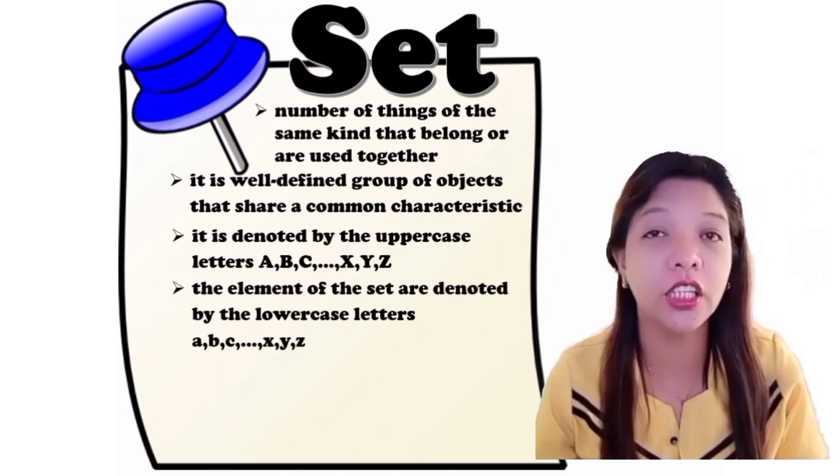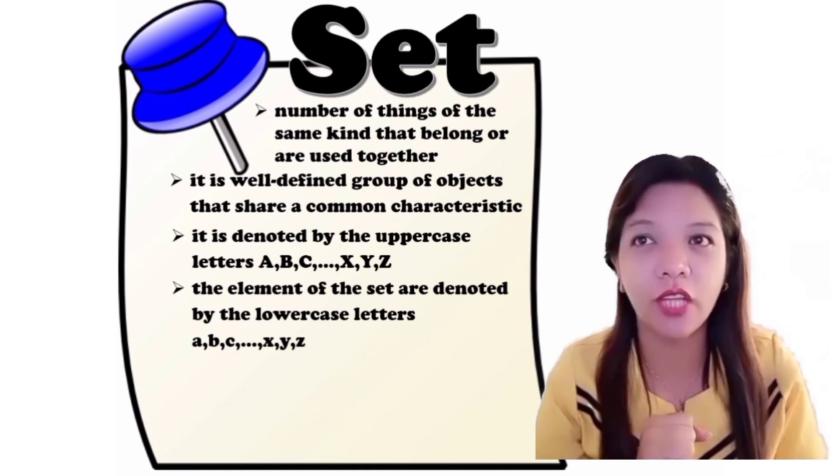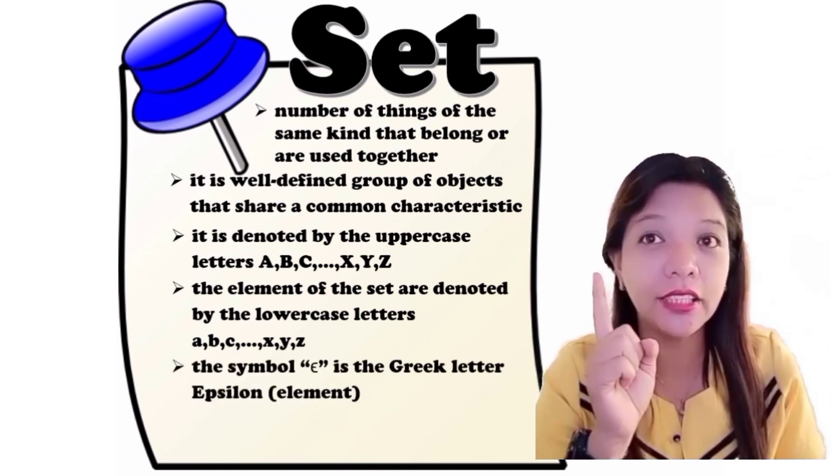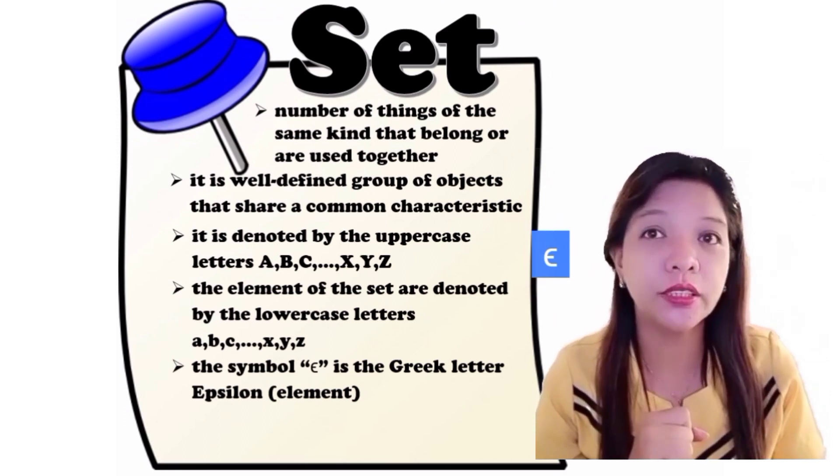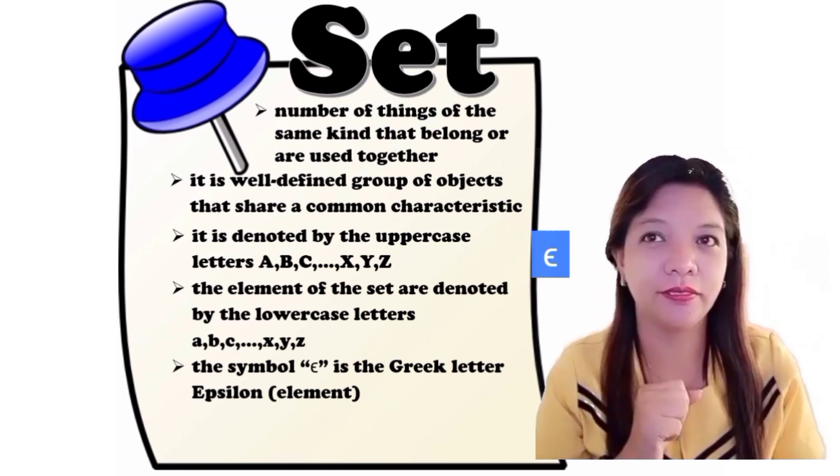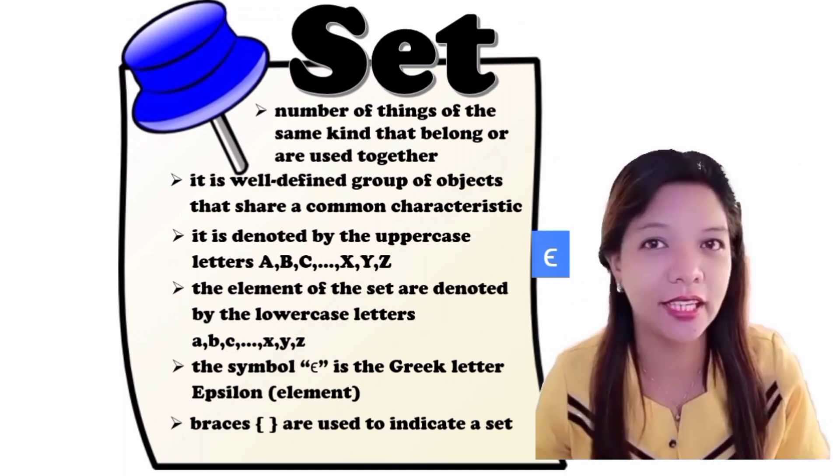The elements of the SET are denoted by the lowercase letter A, B, C up to X, Y, Z of the alphabet. And this symbol is called EPSILON, which means ELEMENT. Braces are used to indicate the SET.